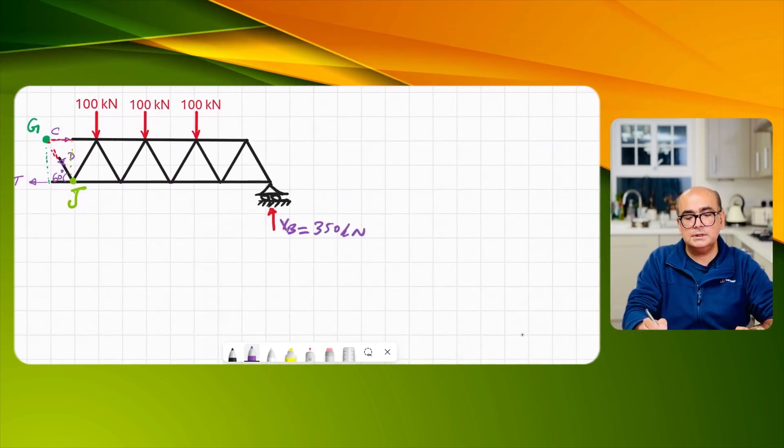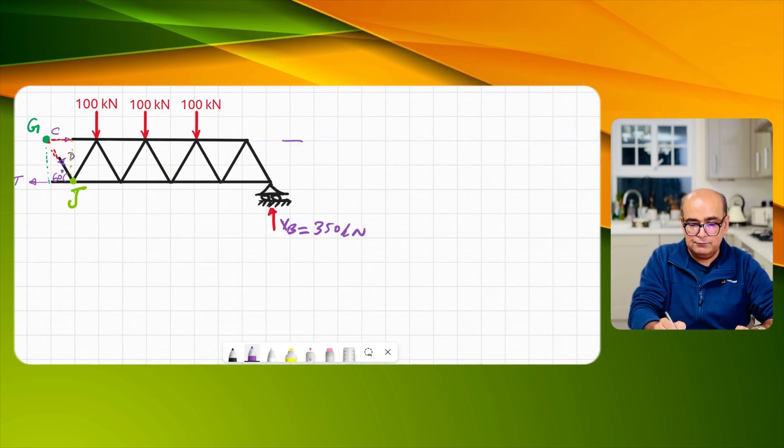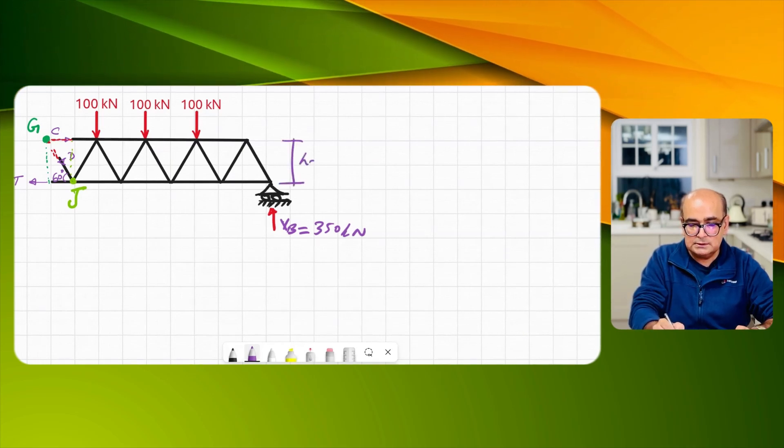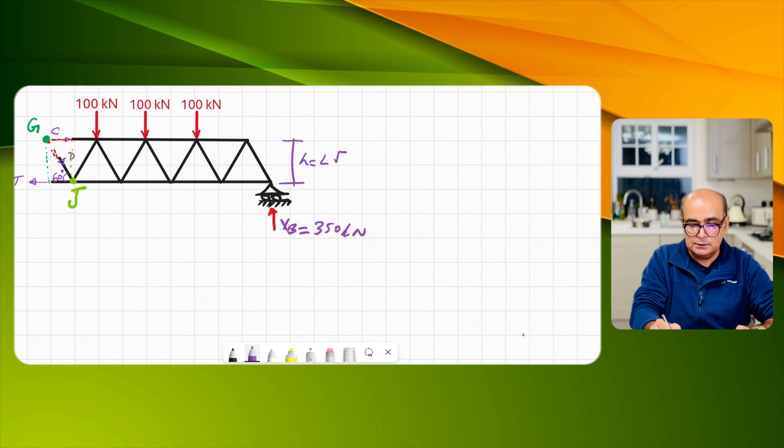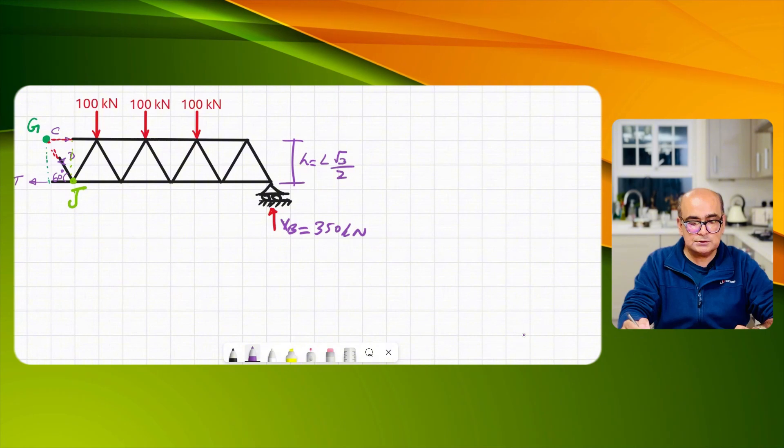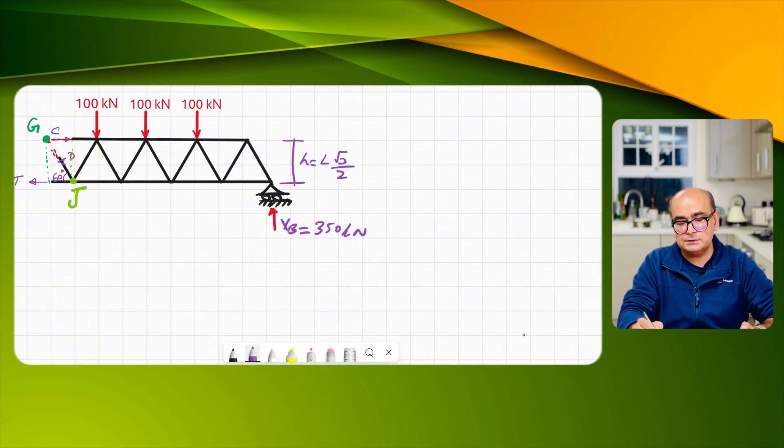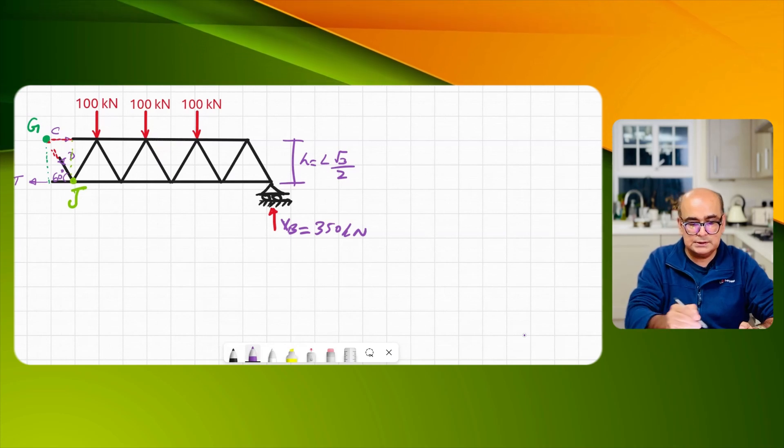This is the free body cut. VB is equal to 350 kilonewton and you remember from the previous bit that h was equal to L√3 over 2. So let me first of all find out the force in diagonal although that force will not control.